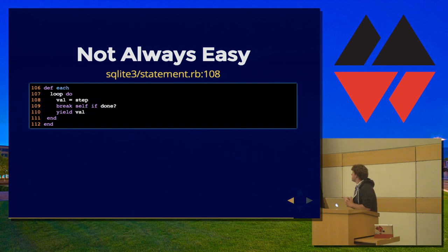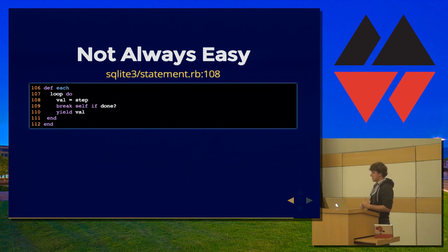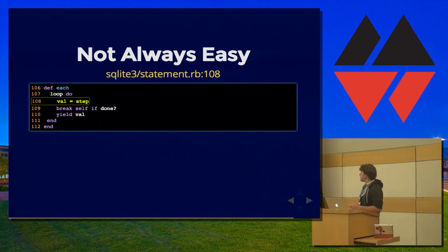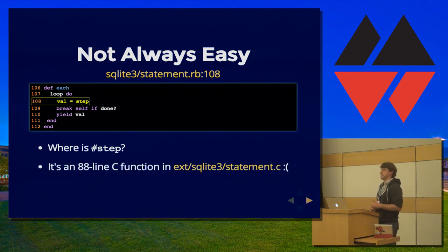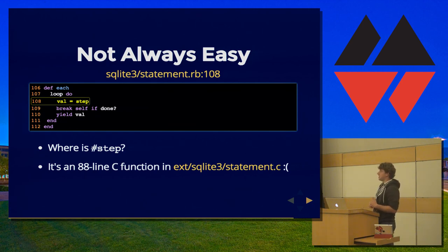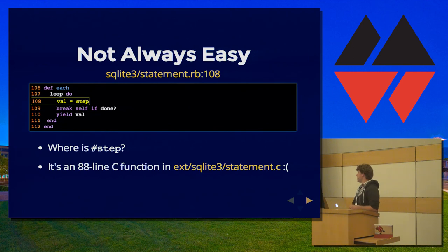As for SQLite3::Statement — there were 300 objects allocated where we wanted just 100. The offensive line was line 108: 'val = step'. Step is not a local variable in this method, so it must be a method, but you can't find it in this file. It turns out it's in the C extension in SQLite. It's entirely possible to find where strings are being allocated in that C function, but they might be calling further C functions, and that was a rabbit hole I decided not to go down. 300 isn't terribly offensive over 100, but it would probably be super exciting to investigate — maybe it doesn't need to allocate so many strings.